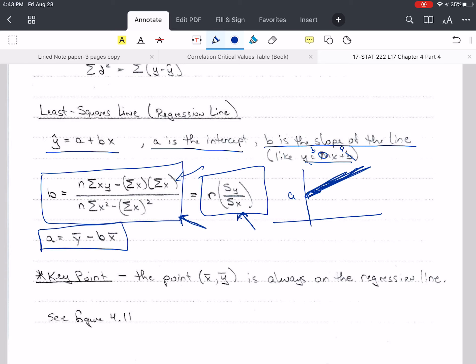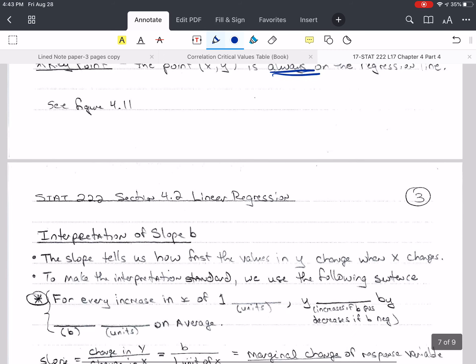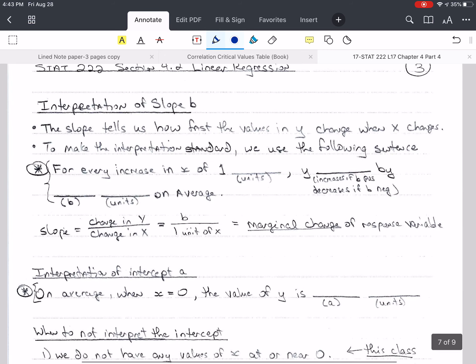We calculate a using y bar minus b times x bar. I want you to know that the point x bar, y bar is always on the regression line. Always. If you plug in x bar for the value of x in this equation, you're going to get y bar. There's a figure 411 in our book that you can look at for that.